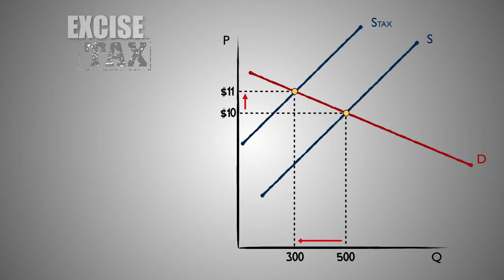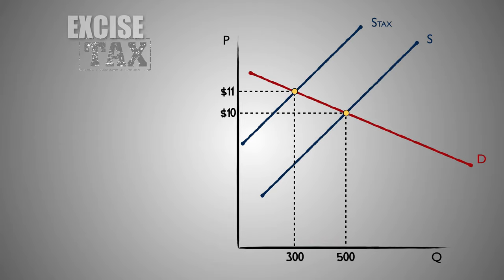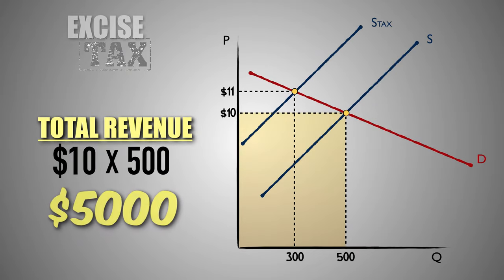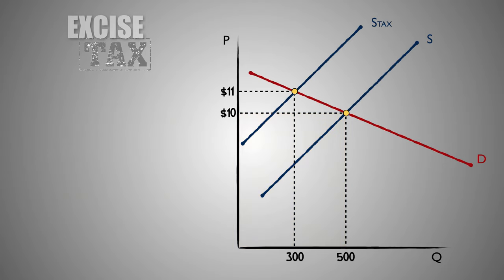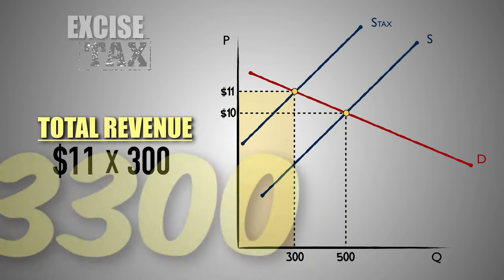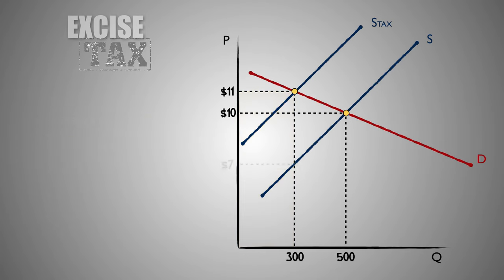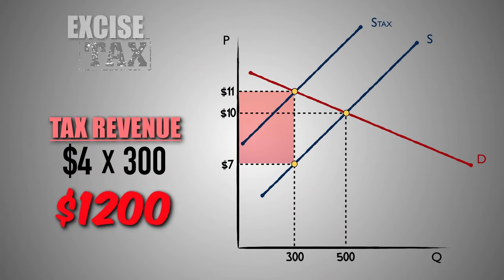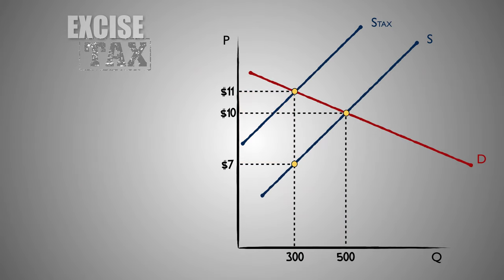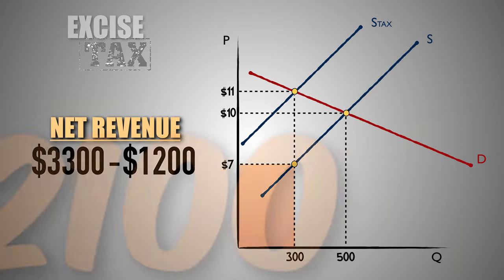After the $4 per unit tax, the price of Good S has increased to $11, and the output in the market has decreased to 300 units. From here, we can determine that firms earned a total revenue of $5,000 before the tax. However, after the tax was imposed, the total revenue for firms that produce Good S decreased to $3,300. The tax revenue generated by this per unit tax is $1,200, and the net revenue kept by firms in the industry is $2,100.